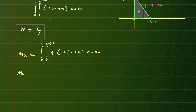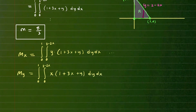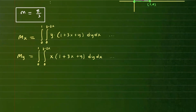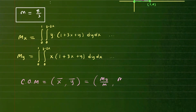For the moment about the y-axis, we use the same double integral from 0 to 1 and from 0 to 2 − 2x, but multiply by x times the density: x(1 + 3x + y) dy dx. Once you compute both moments, the center of mass is (x-bar, y-bar), where x-bar = M sub y divided by mass and y-bar = M sub x divided by mass.